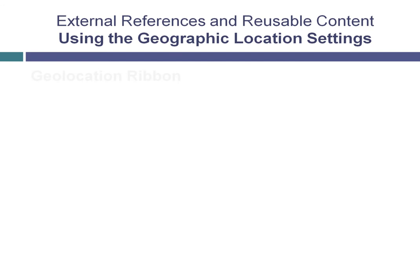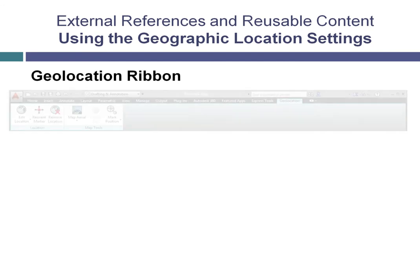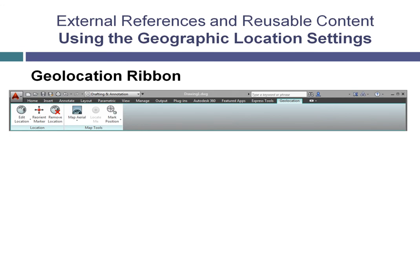Once the drawing has been geolocated, a Geolocation tab is added to the ribbon. This tab contains tools for modifying the geographic location, reorienting the geographic marker, controlling the display of the underlying map, and marking positions in the drawing.